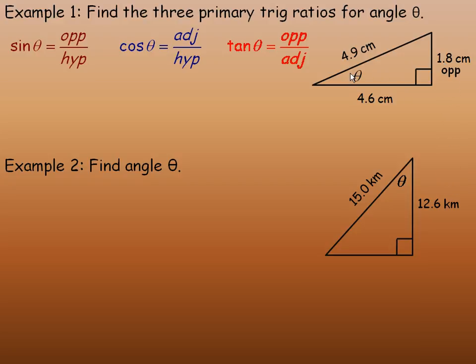So for this angle, the 1.8 is opposite it, straight out from it, so we'll call that the opposite side. The 4.6 is beside it, and it's not the hypotenuse, so the 4.6 is the adjacent. And the longest side here, the side opposite the right angle, is the hypotenuse, so we'll label the 4.9 cm side as the hypotenuse.